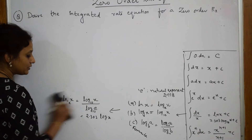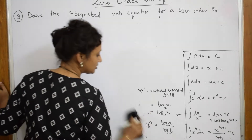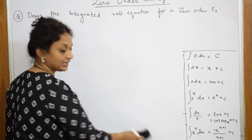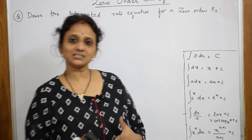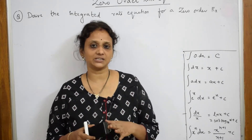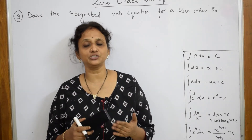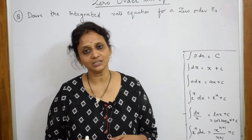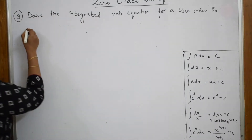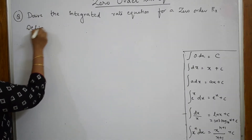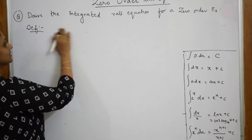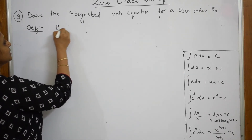Now we are going to start with the integrated rate equation of zero order. What does zero order mean? When integrated rate equations are given to you, first try to write the definition of that particular thing and then start with the integrated equation. So let me write what zero order is.